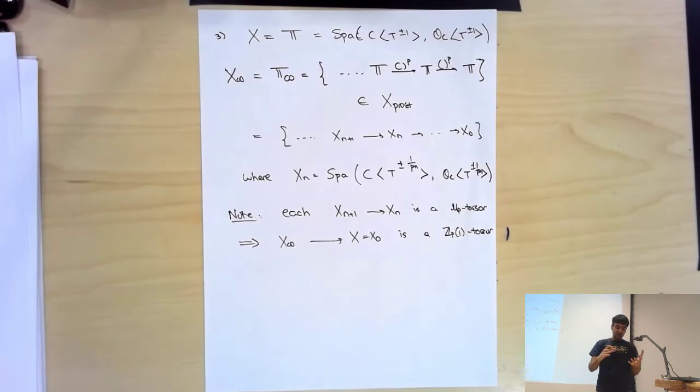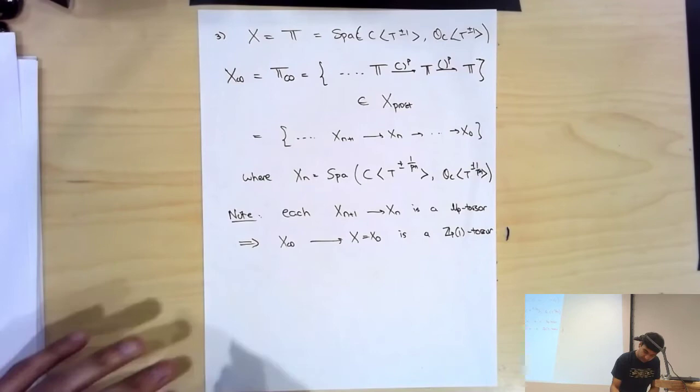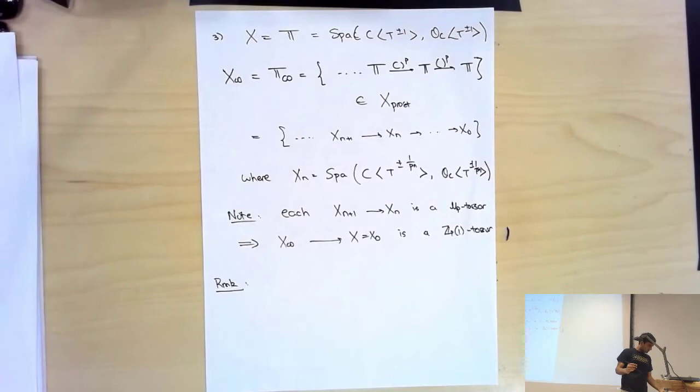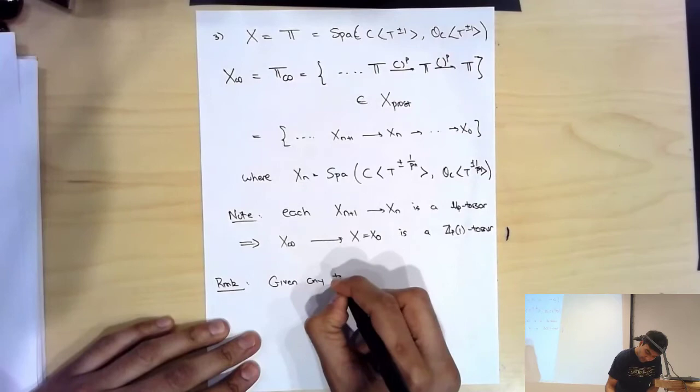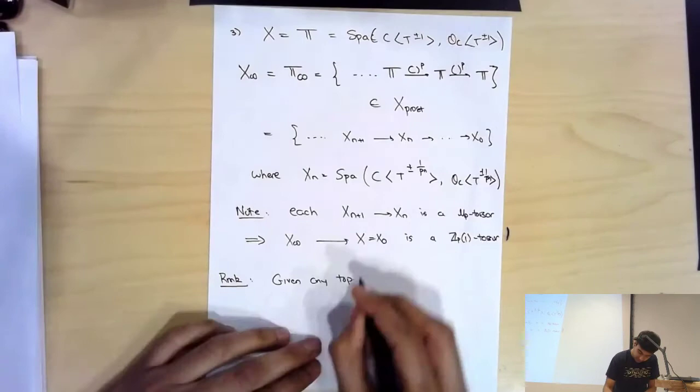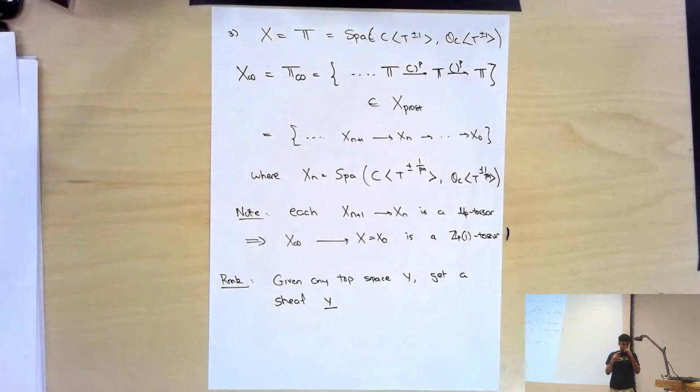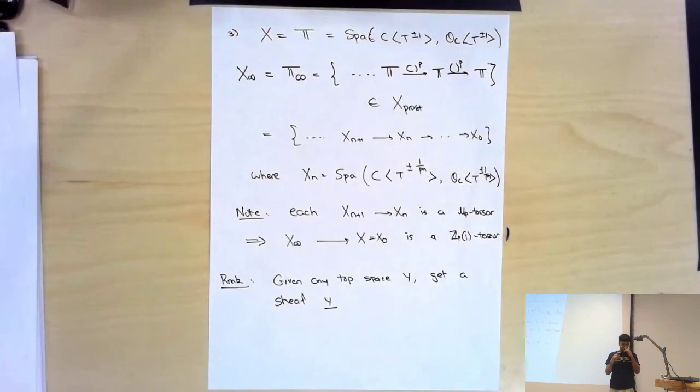Let me make the following definition. Given any topological space Y, you get a sheaf Y on the pro-étale site — I'll write it as Y with an underline, or following the literature, F_Y. Given an object {U_i}, you send it to the set of continuous maps from the inverse limit of the |U_i|'s to Y. The point is that the inverse limit of these gadgets makes sense as a topological space and can be quite interesting. This is how I always think of a topological space — or a topological group — as giving a sheaf on the pro-étale site.